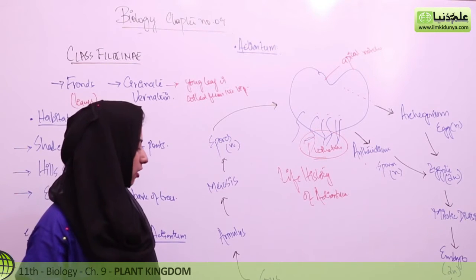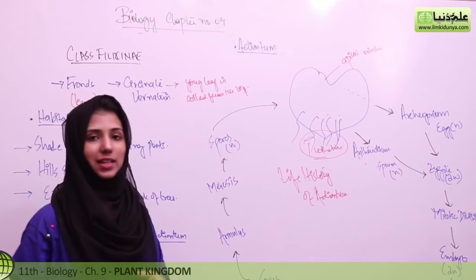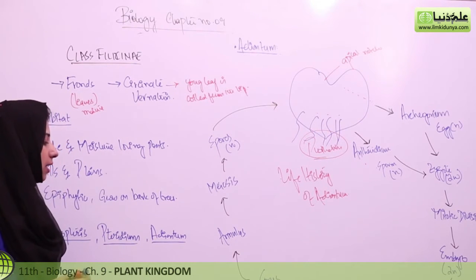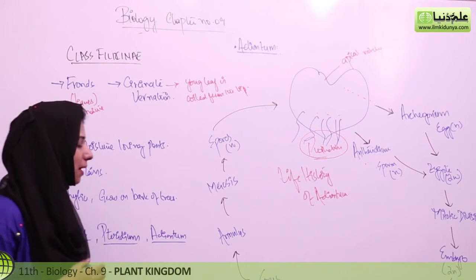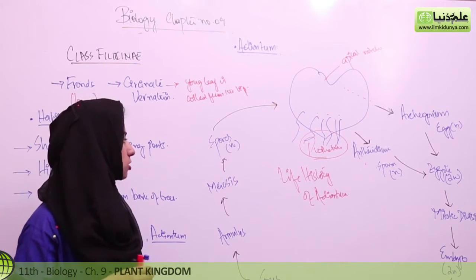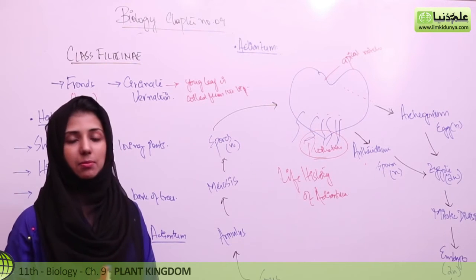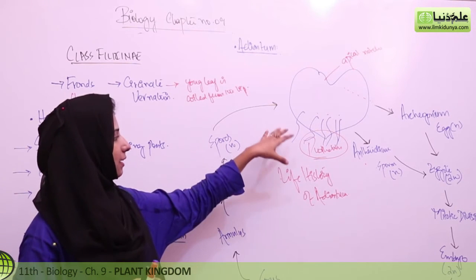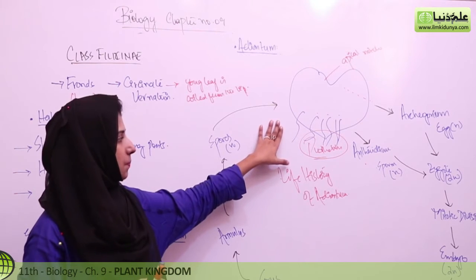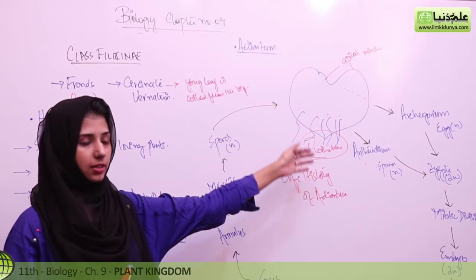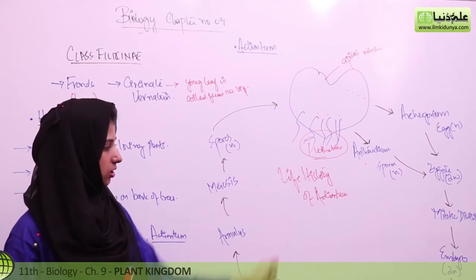The sori, in the case of Pteridium with dichotomous venation, will show double veins. They will give rise to the annulus. The annulus will again undergo meiosis, and after meiosis the spores will be dispersed in nature. The spores will land on the prothallus and obviously continue the formation of the next gametophytic generation.